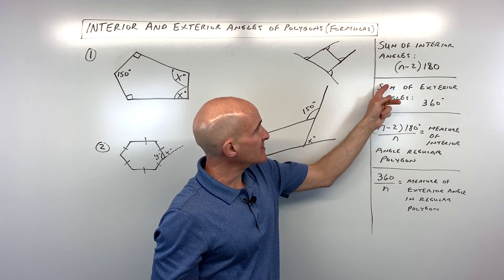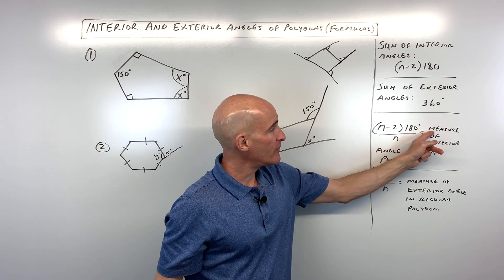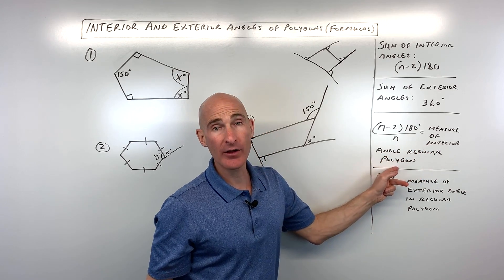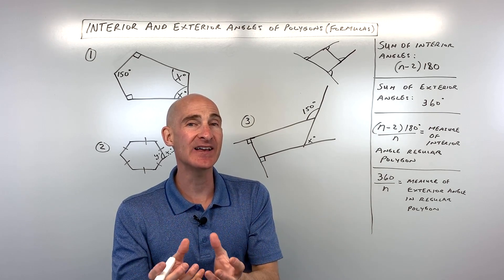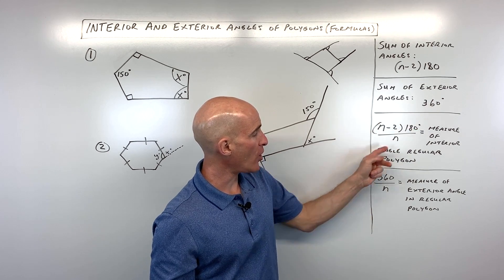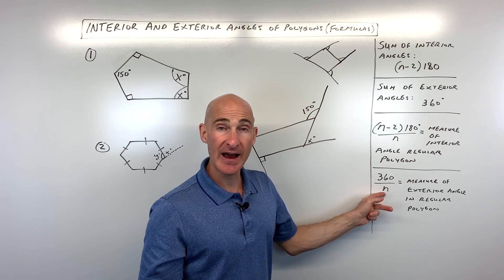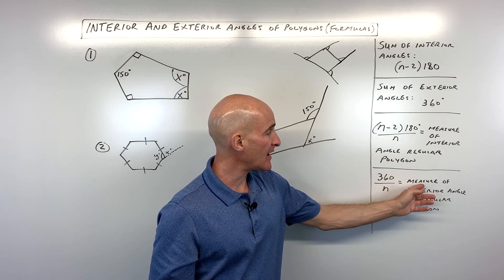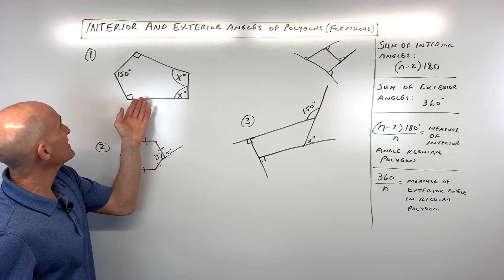This formula here is the same as the interior sum formula, but we're dividing by n. This is how you find the measure of just one interior angle in a regular polygon. Remember, with regular polygons, all the angles are the same and all the sides are the same. Similarly, dividing 360 by the number of sides gives you the measure of just one exterior angle.